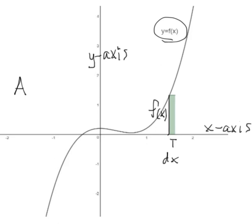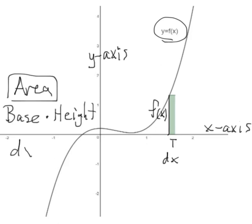Now writing the area of this rectangle using our notation is straightforward. Take the base, dx, multiply it by our height, f(x), then rearrange this to f(x)dx.